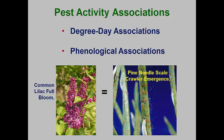Another technique is to use visual indicators of biological activities. It appears that many plants develop at the same rates as many insects and mites. Thus, when a plant like common lilac is in full bloom, this is the same time that an insect like pine needle scale crawlers hatch. These associations are called phenological associations.